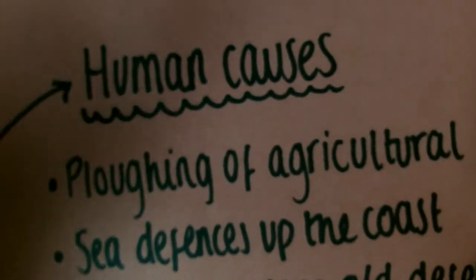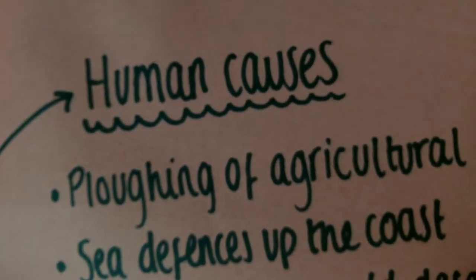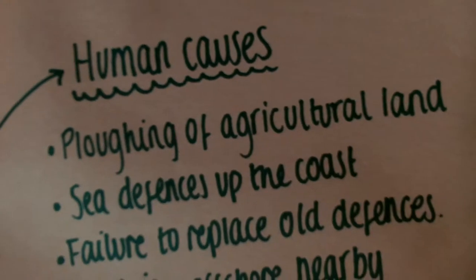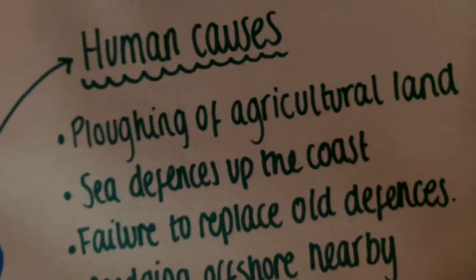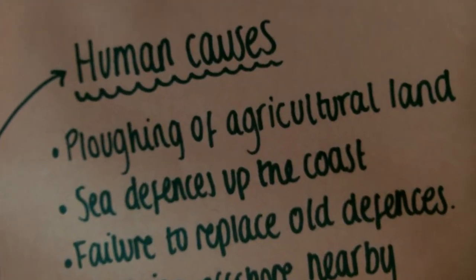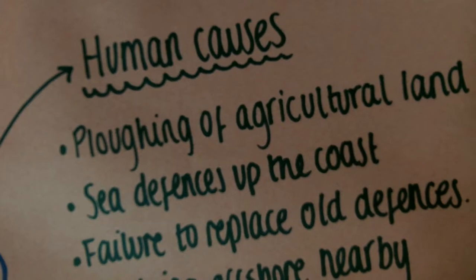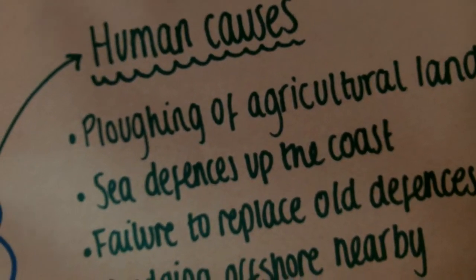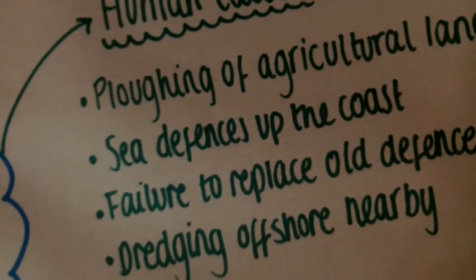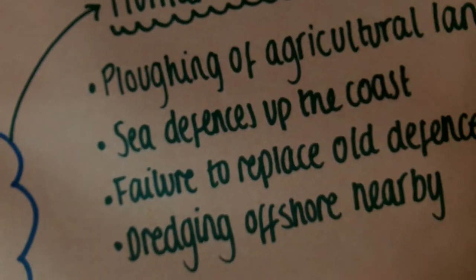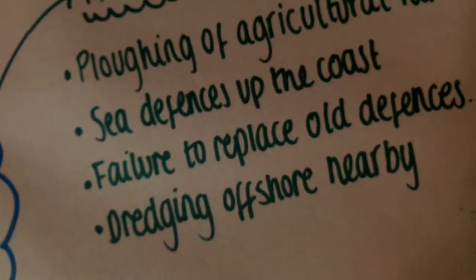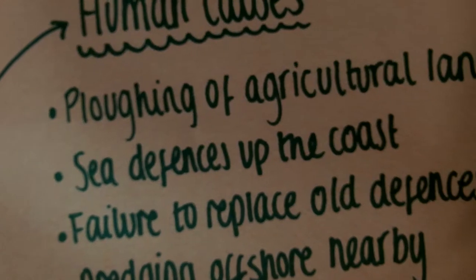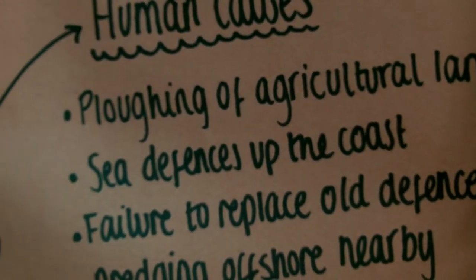The human causes are ploughing of agricultural land which breaks up the surface, encouraging infiltration and saturation of soil which causes slumping. Sea defences up the coast — there are groynes in Cromer which reduce the beach size allowing bigger waves to get closer to the cliff, causing more erosion.